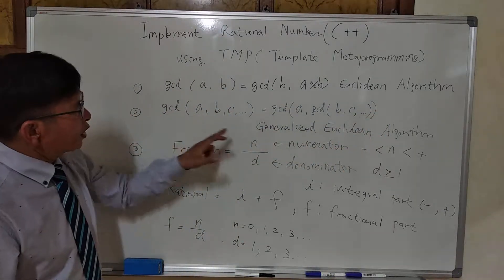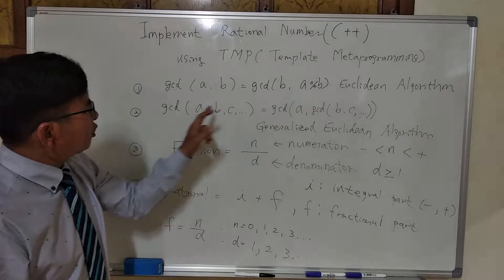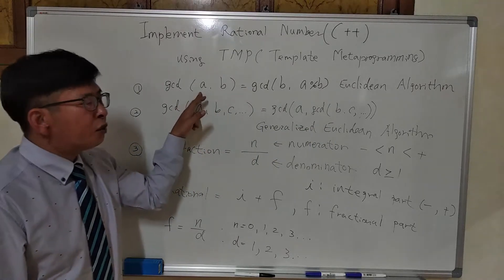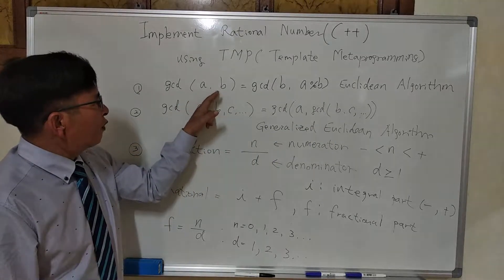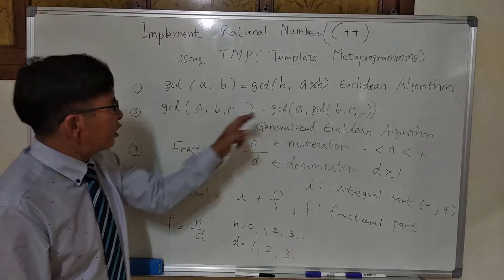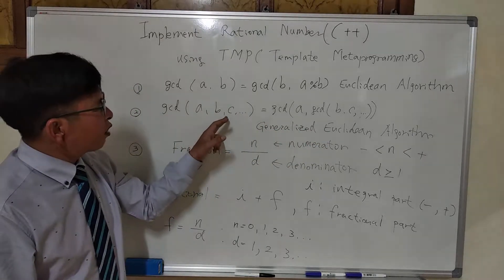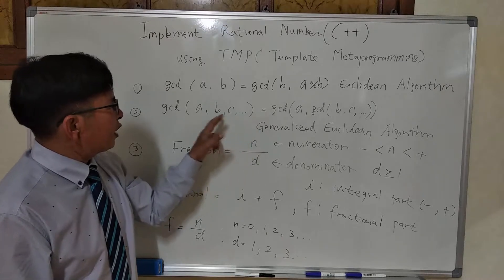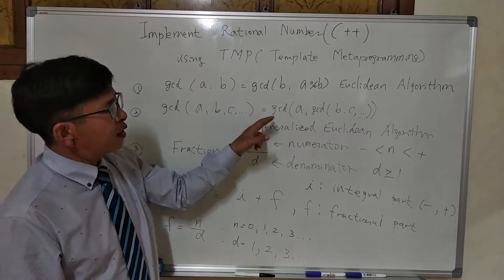Then we also need generalized Euclidean algorithm. Euclidean algorithm usually deals with two arguments, but generalized Euclidean algorithm deals with two or more arguments, like three arguments or four arguments.